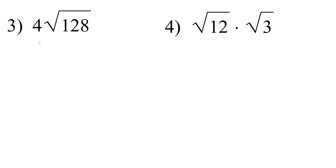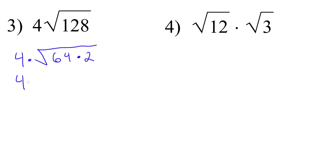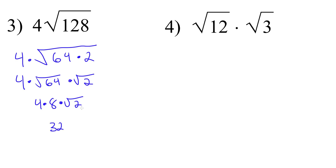For number 3, we have 4 radical 128. Remember, this is multiplication — this means 4 times the square root of 128. So let's go ahead and factor this. 128 breaks into 64 times 2. So we're going to say 4 times radical 64 times 2, then separate these: 4 times radical 64 times radical 2. The square root of 64 is 8, so this becomes 4 times 8 times radical 2. And 4 times 8 is 32. Radical 2 can no longer be simplified, so our answer is 32 radical 2.